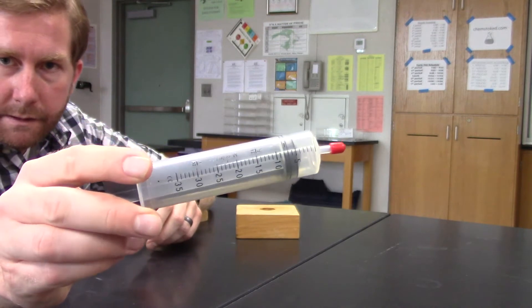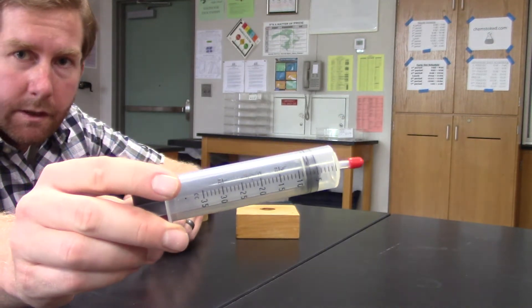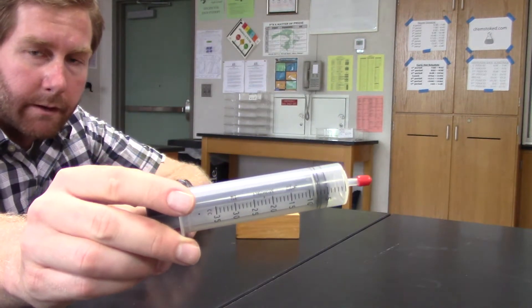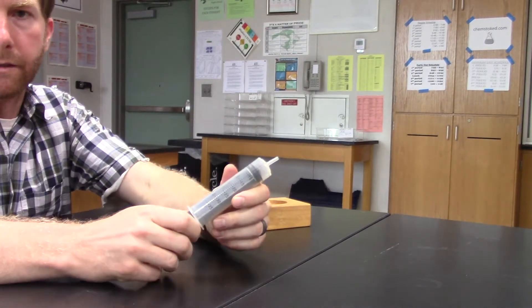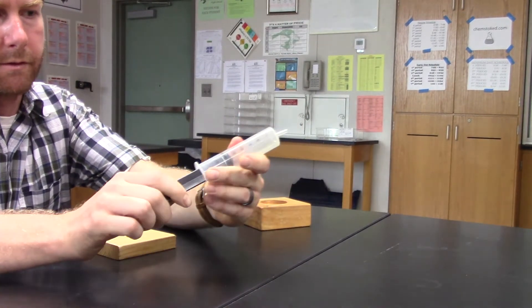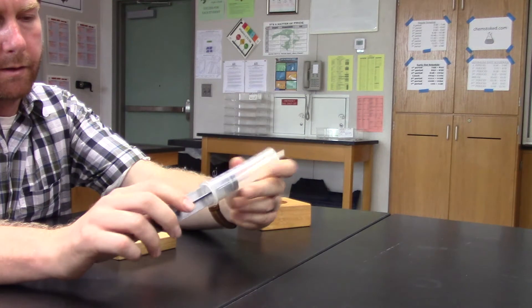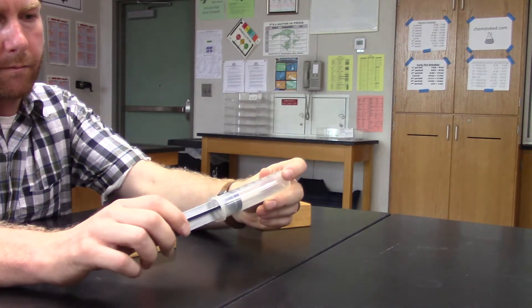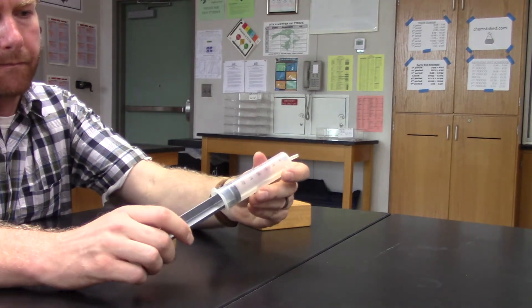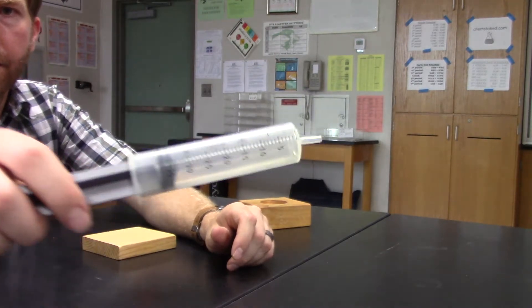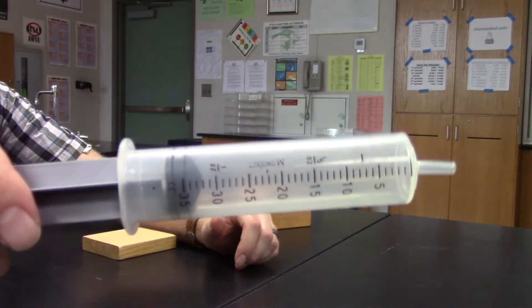The units on it are cc's or cubic centimeters, also known as a milliliter. So we're going to take this syringe and we're going to put it up close to the top here and set it so you can see that measurement there.